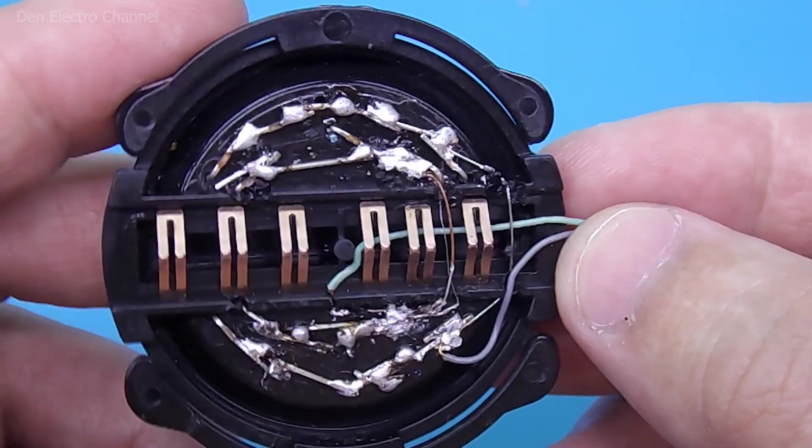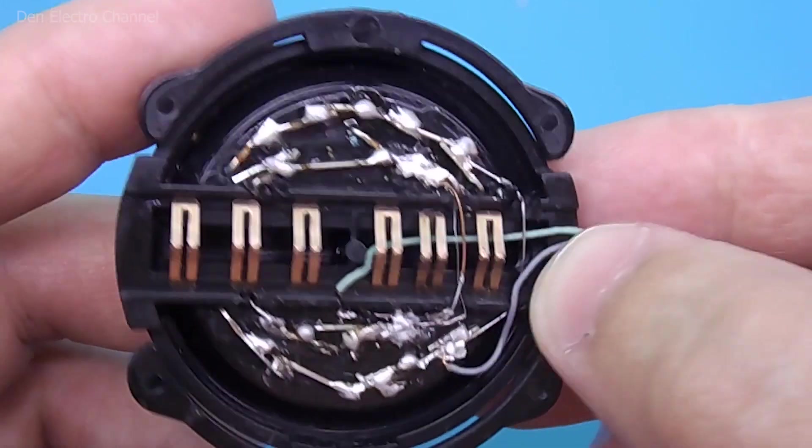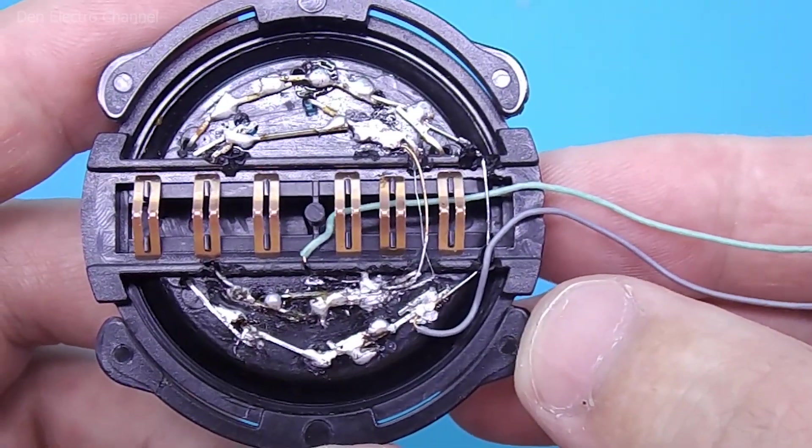On the reverse side, all LEDs are soldered in parallel. Wires are removed from them. When soldering, everything needs to be made as thin as possible so that they do not later cling to the board.